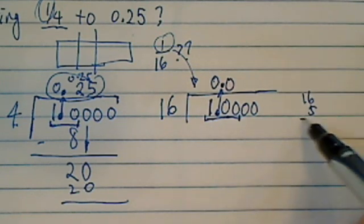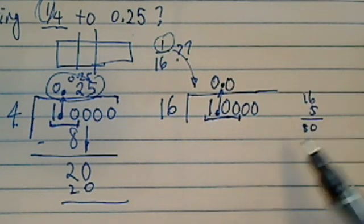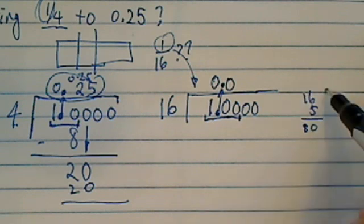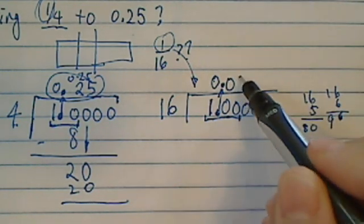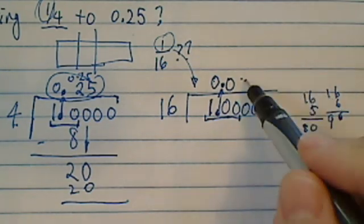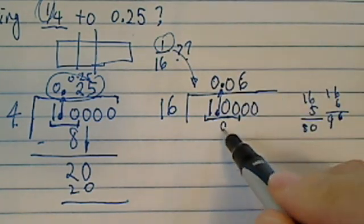16 times 5, that's 80. So you have one more 16 going there. So 16 times 6 is 96. This is just enough, but doesn't go over. So I have a 6 over here. I have 96.